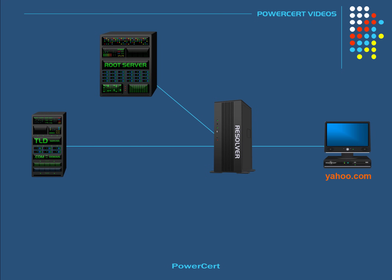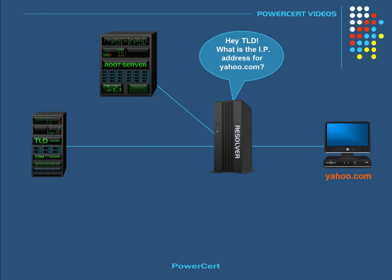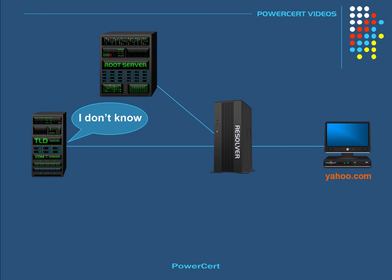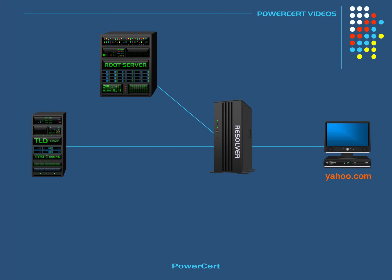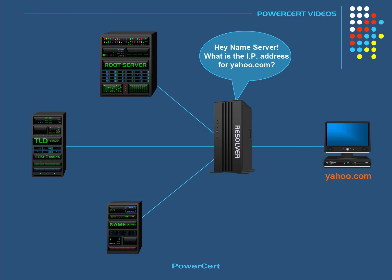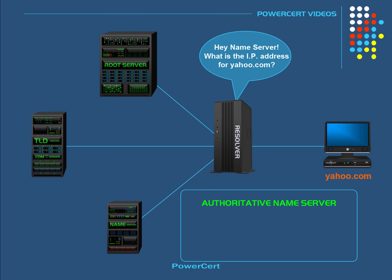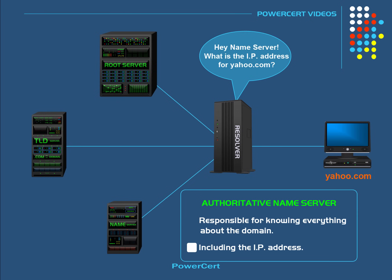So when the TLD server receives the query for the IP address for yahoo.com, the TLD server is not going to know what the IP address is. So the TLD will direct the resolver to the next and final level, which are the authoritative name servers. The resolver will now ask the authoritative name server for the IP address for yahoo.com. The authoritative name servers are responsible for knowing everything about the domain, which includes the IP address. They are the final authority.